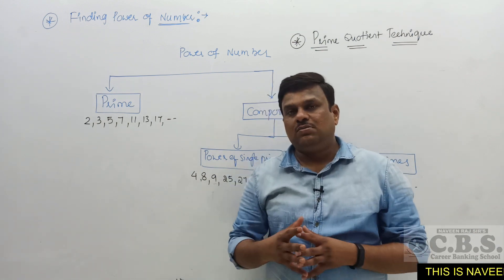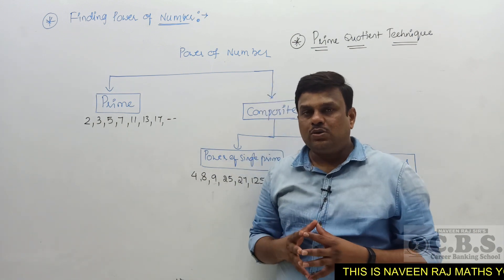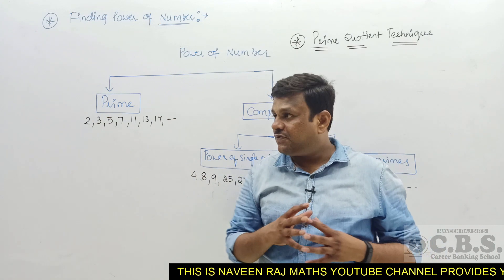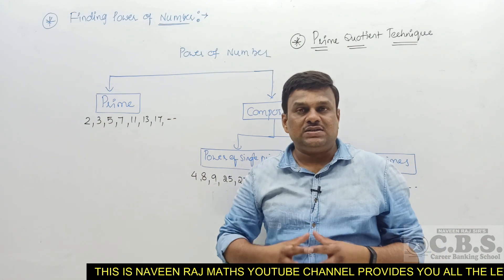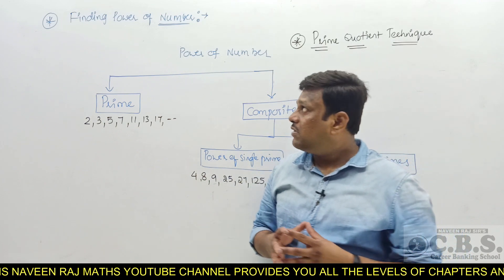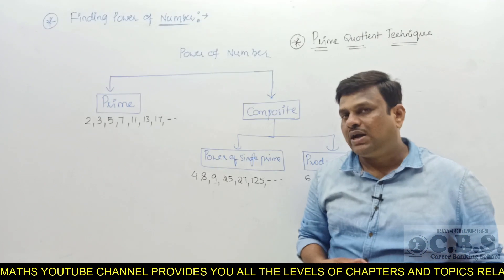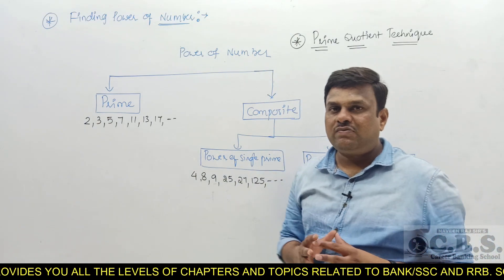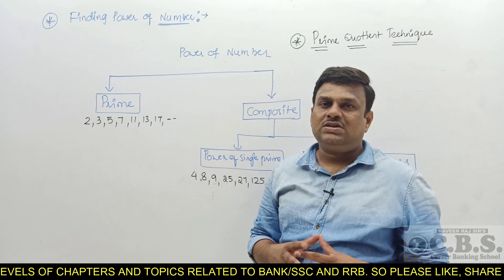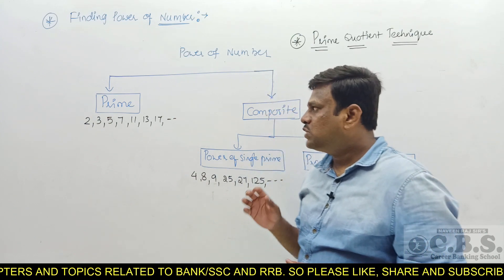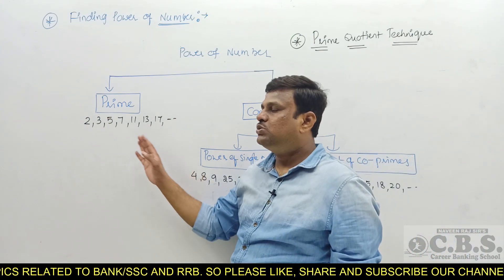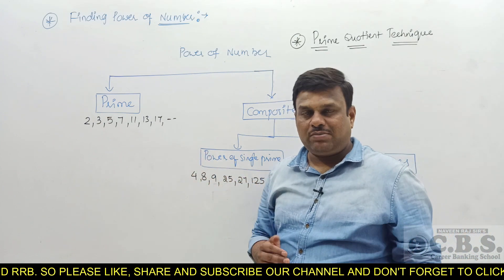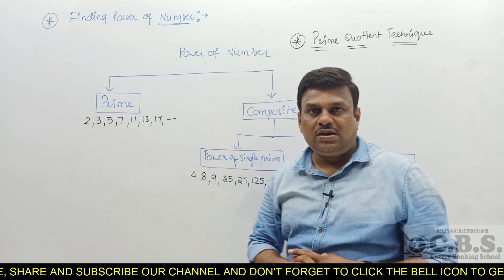Hello everyone, a warm welcome to CBS Institute channel. In this video, we cover how to find the power of a digit in a factorial — a very important topic for SSA exams and RRB MTPC. This is divided into two categories: the first is when the digit whose power we are finding is a prime number, such as 2, 3, 5, 7, 11, 13, 17, 19.